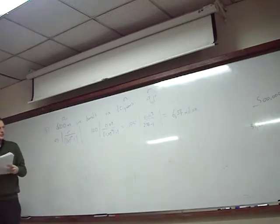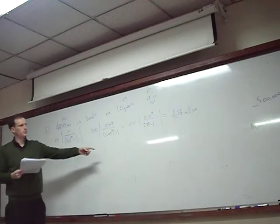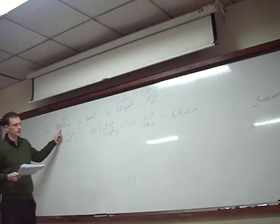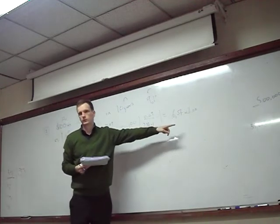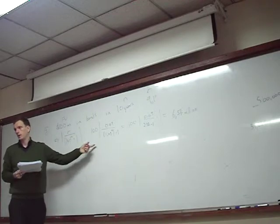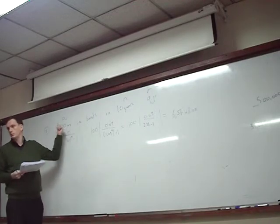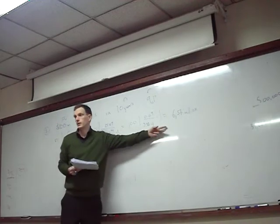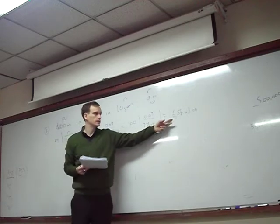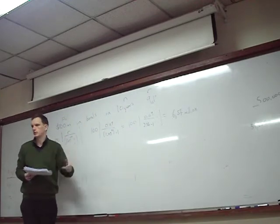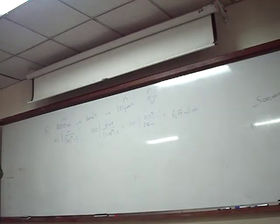So if we put aside 6.57 million every year, we'll have 100 million at the end. The first answer of 16 million was clearly wrong — 16 million times 10 equals 160 million, already more than 100 million before even accounting for interest. The answer of 6.57 million makes sense: 10 times 6 is 60, and adding compound interest probably gets us to 100. Always check your calculation.